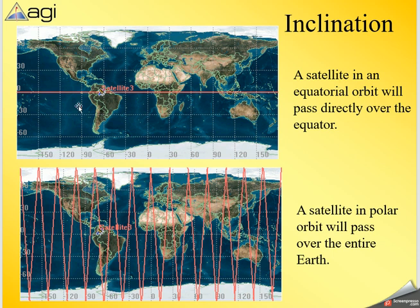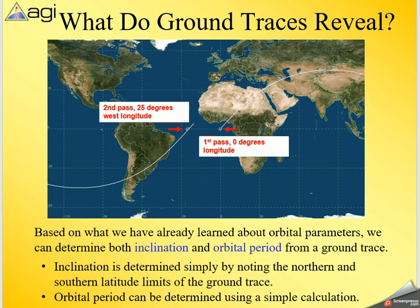The equatorial orbit just covers the equator, while a polar orbit passes over the entire Earth — up and back, going north to south and south to north in diagonal traces. It's not a V-shape and doesn't just turn and head back down — it's two traces going diagonally.